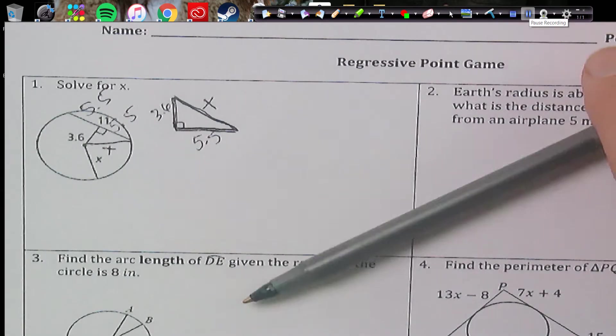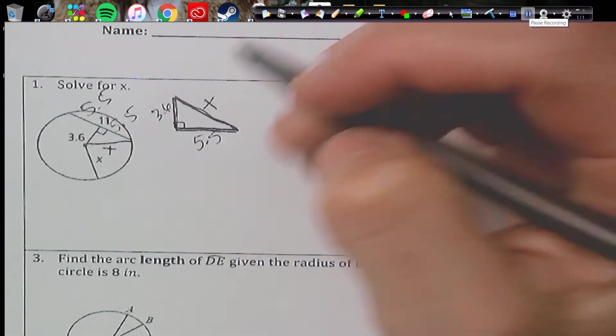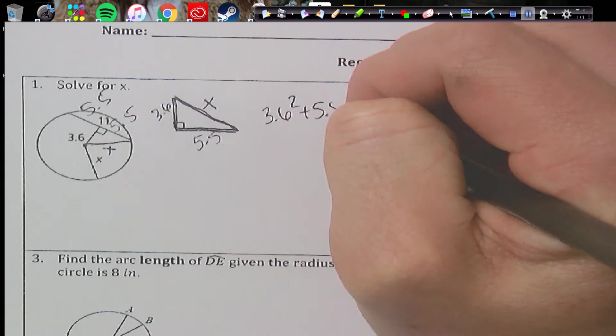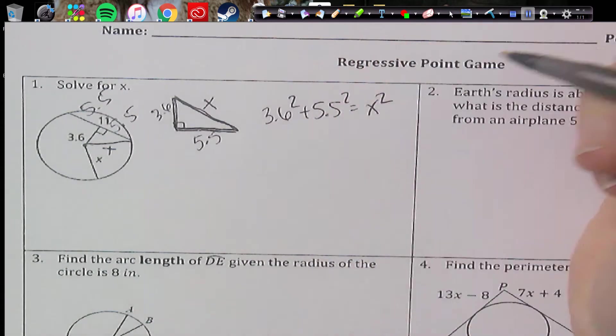Okay, so we set up our Pythagorean theorem, 3.6, 5.5. Square those and x is in the position of the hypotenuse. So that's why that one's by itself.